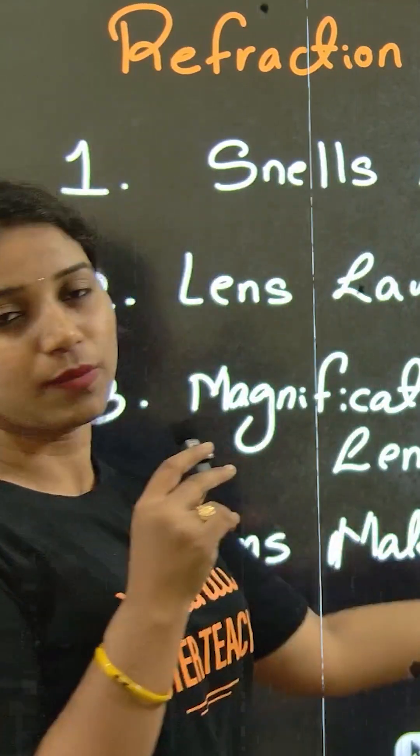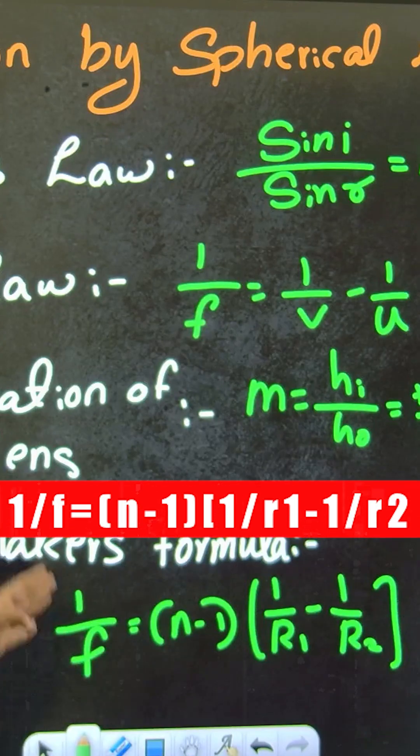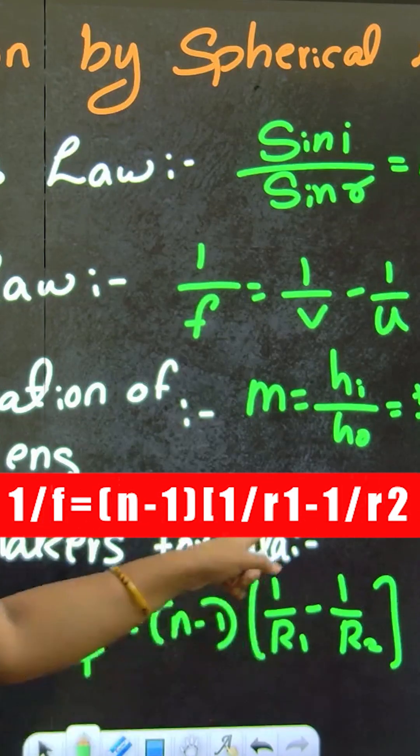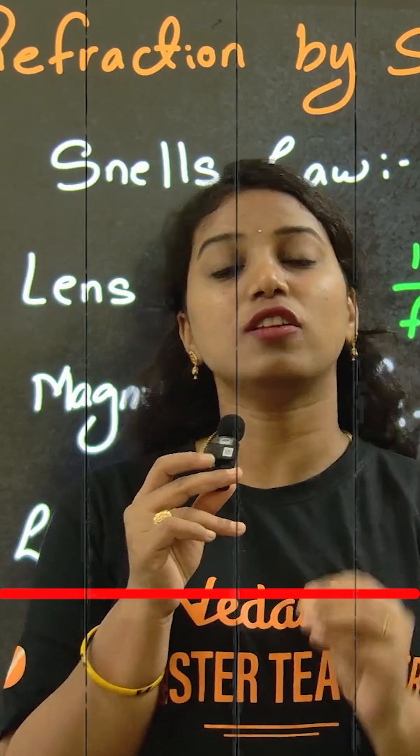And last but not least, lens maker formula. It is very important. So here 1 by f equals n minus 1 into 1 by r1 minus 1 by r2. But this formula requires proper value substitution. You can follow the sign convention.